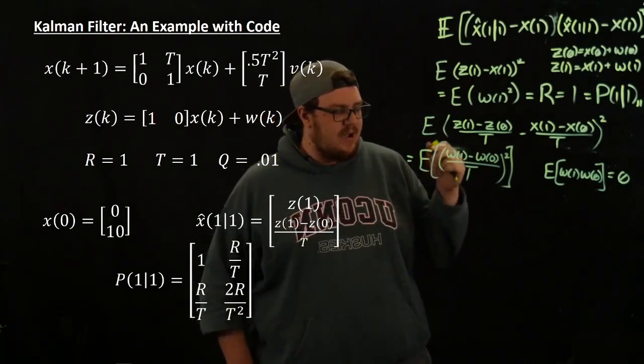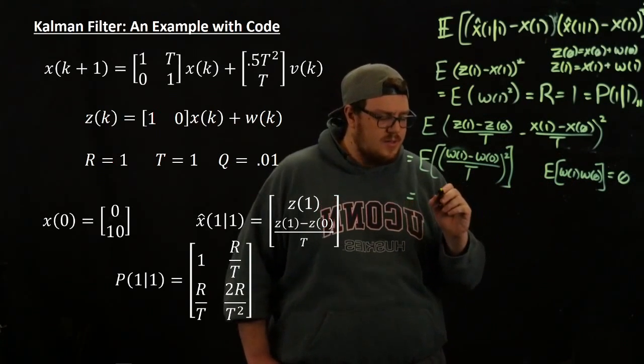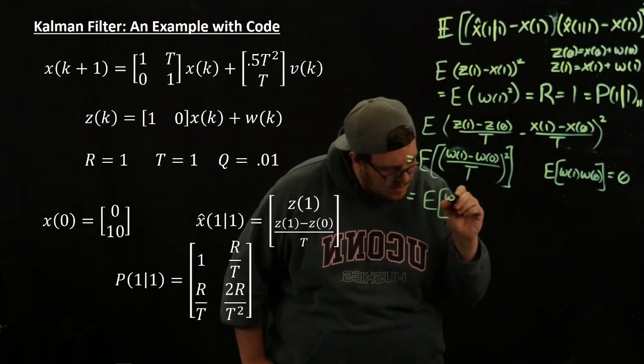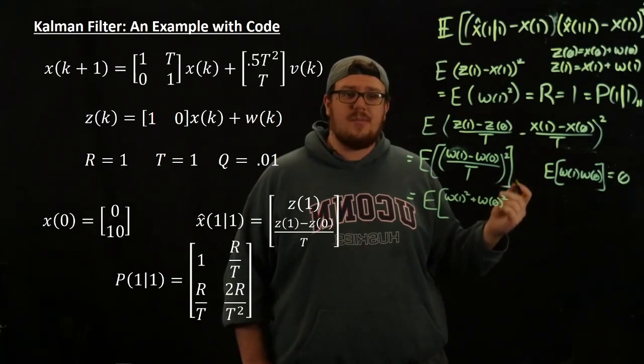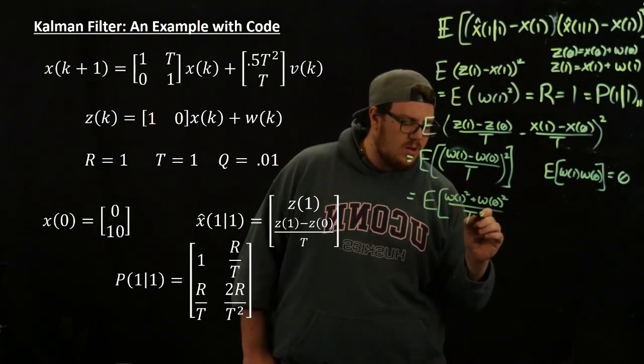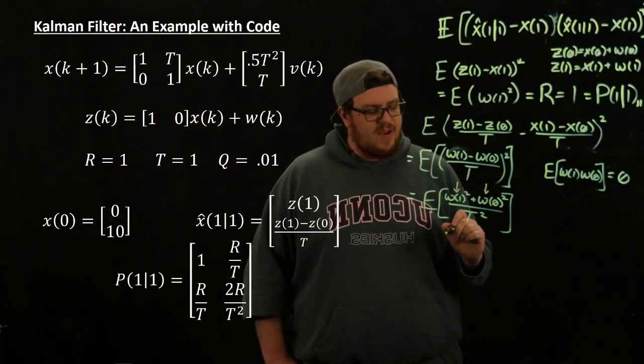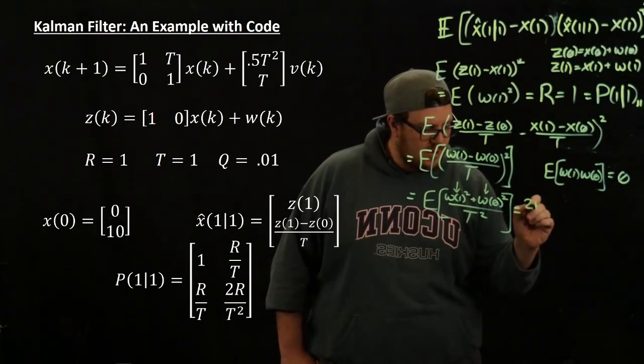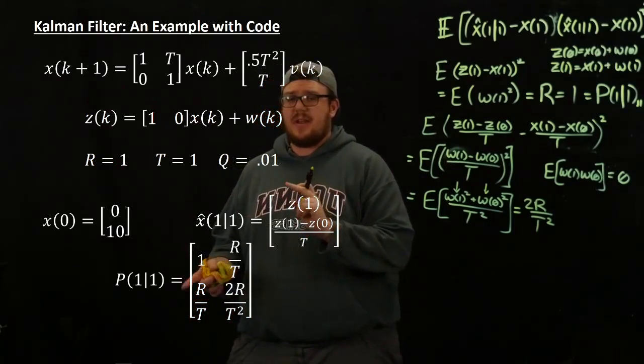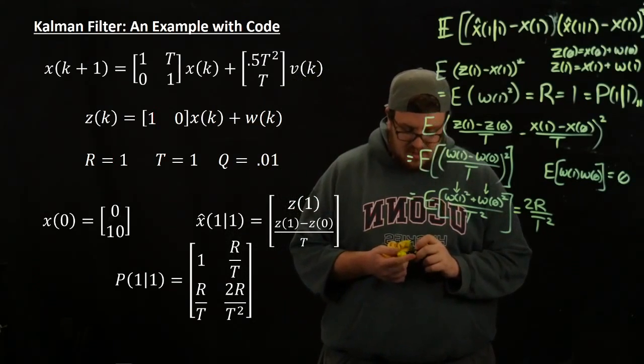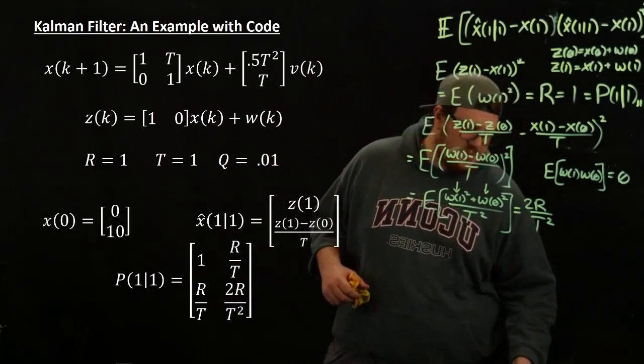If we plug in these here, take the subtraction, we find that this is the expected value of w1 minus w0 over t squared. And using this property, if we FOIL this out and expand it, we find that we end up with the expectation of w1 squared plus w0 squared plus a cross term, but we know that the cross covariances are going to be 0. All divided by t squared. And if we look at this, well, this is a variance, this is a variance, and then the same variance, they're actually just r. So we get 2r over t squared. So we proved the top 2, and I'll leave the side 2 here, r over t, as an exercise for you to do. You will get r over t, where r in this case is 1.